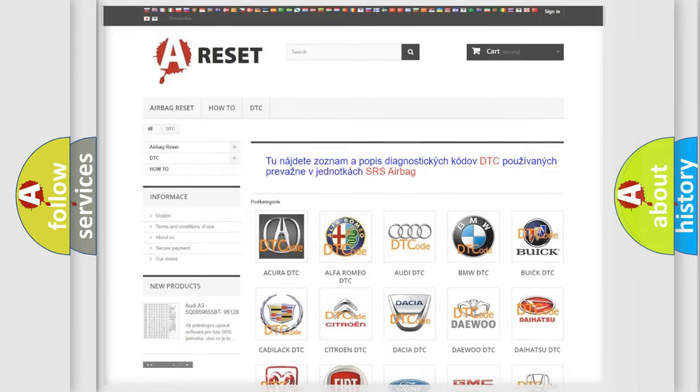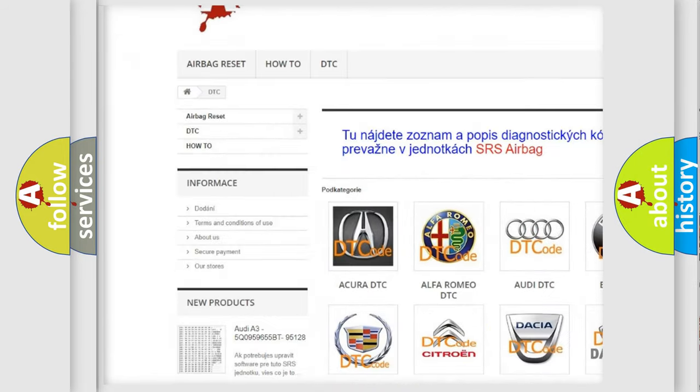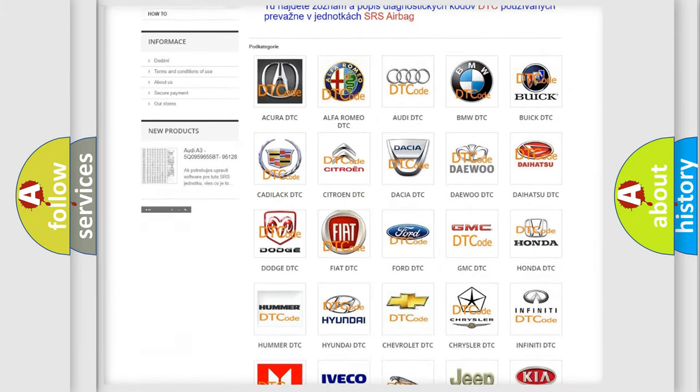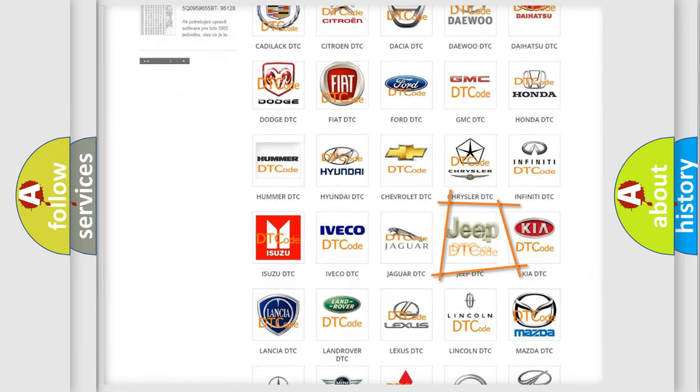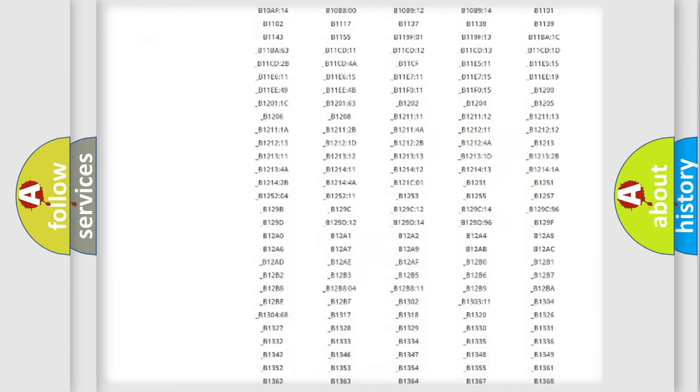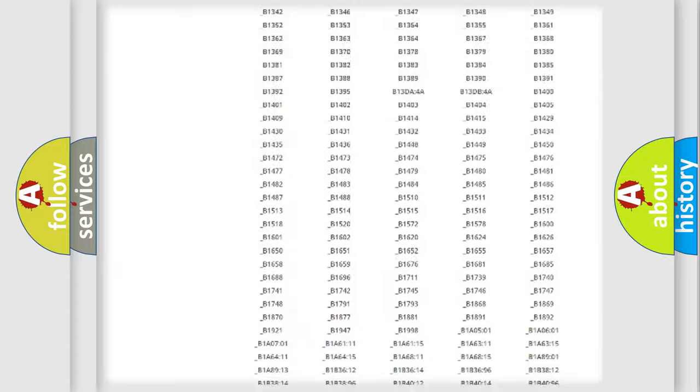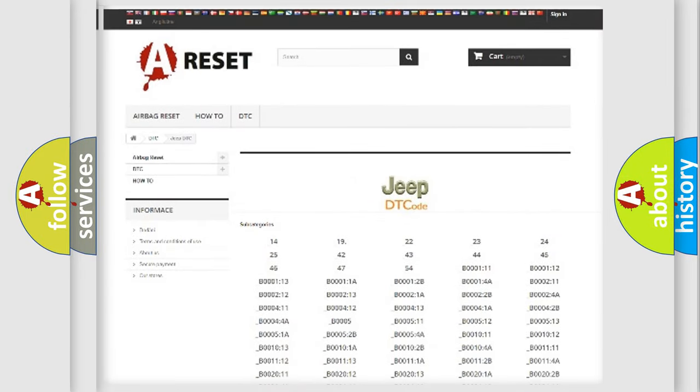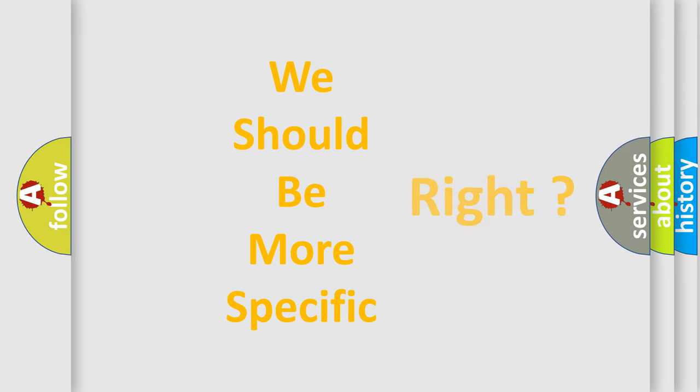Our website airbagreset.sk produces useful videos for you. You do not have to go through the OBD2 protocol anymore to know how to troubleshoot any car breakdown. You will find all the diagnostic codes that can be diagnosed in vehicles, and also many other useful things. The following demonstration will help you look into the world of software for car control units.